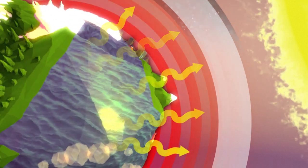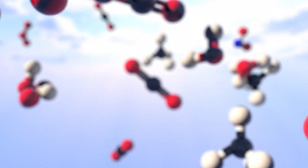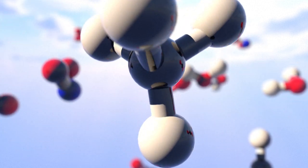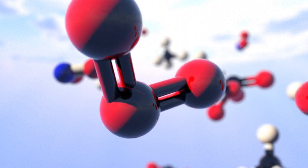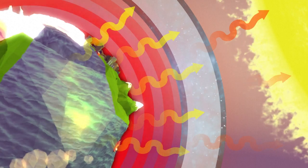Part of this heat is stopped from returning into space by greenhouse gases in the atmosphere. The main greenhouse gases are water vapor, carbon dioxide, methane, nitrous oxide, and ozone. They retain a large part of the infrared radiation released from the Earth's surface.